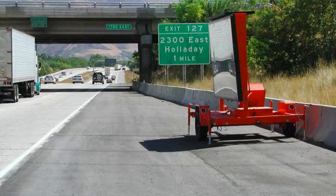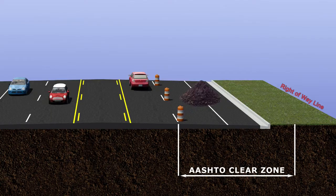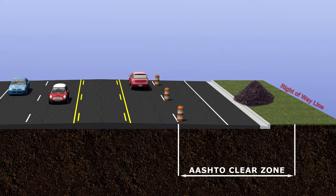Let's take a look at a Type A hazard. If the equipment is not being used, then it is an unnecessary hazard to the traveling public and needs to be moved outside the astral clear zone or outside the UDOT right-of-way.